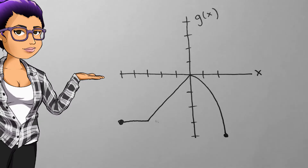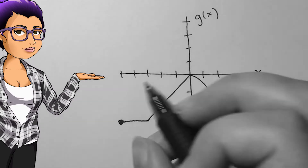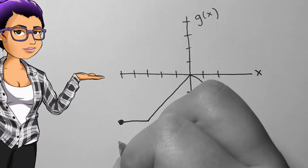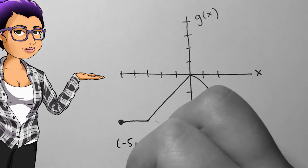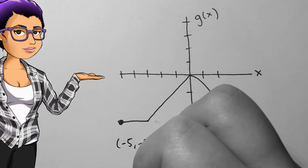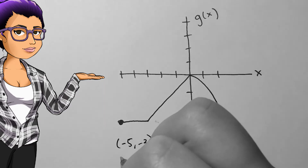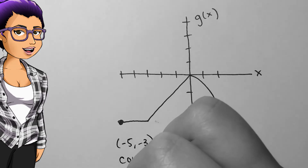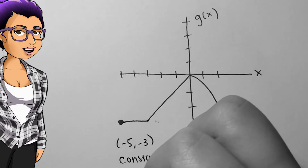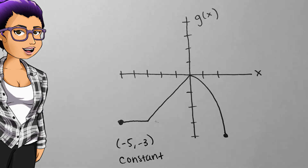Using the given graph, we want to identify the intervals where the function is increasing, decreasing, and constant. We'll use parentheses on our answers since we cannot be decreasing at a point.